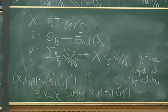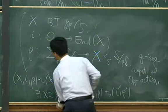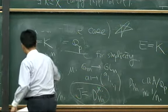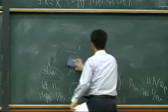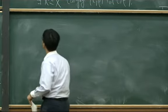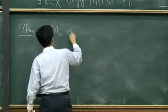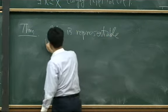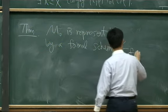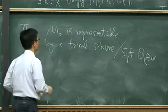This is really a moduli of Barsotti-Tate groups with extra structure, where σ with O_B action is fixed. The functor M₀ is representable, and the theorem by Rappoport-Zink states that M₀ is representable by a formal scheme over the formal scheme associated to the Witt vectors ring. The next step is to give the group action, which requires passing to the generic fiber.